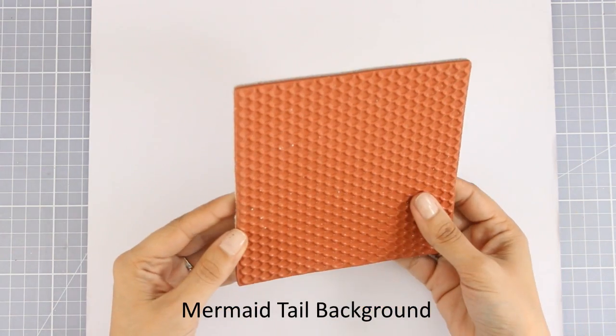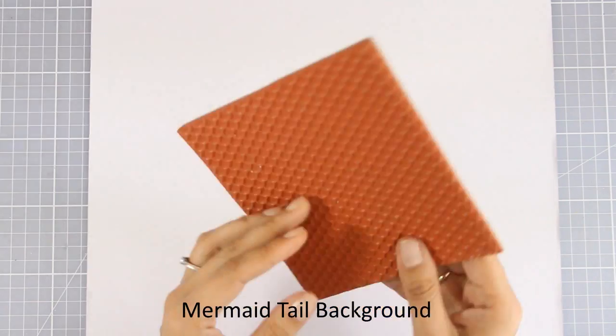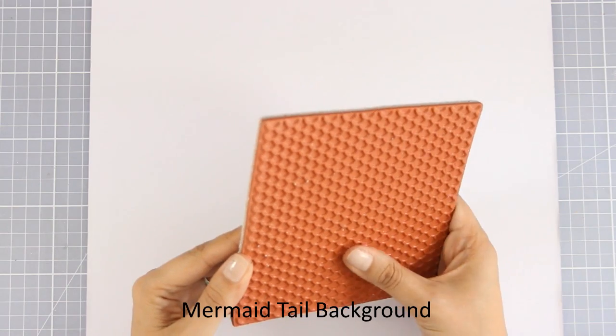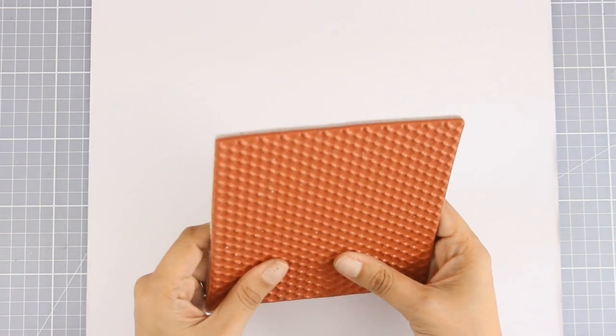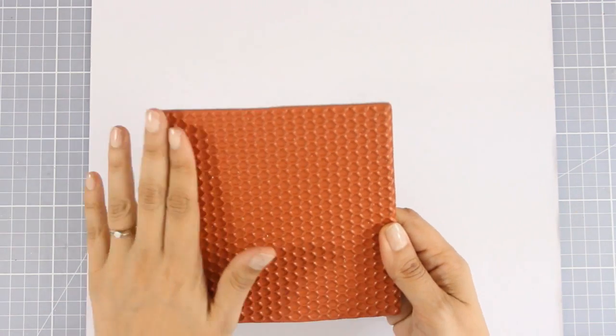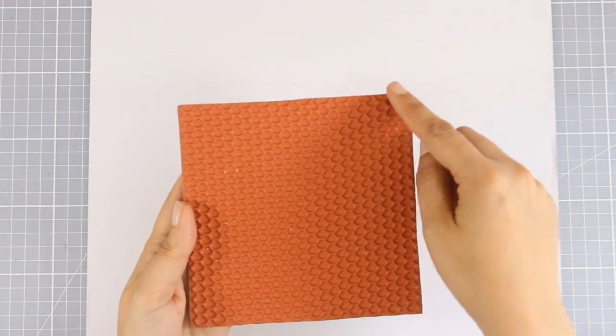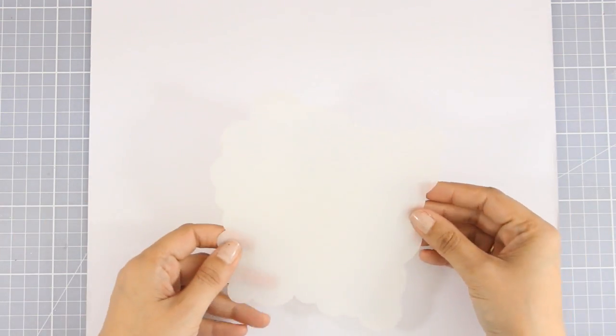And here is a big rubber stamp which is called Mermaid Tail, and it gives you a beautiful background of fish scales. This is going to be the perfect background for all those cards that are ocean or mermaid themed. And again, this is one of those large stamps that are going to cover up completely your card whether vertically or horizontally.